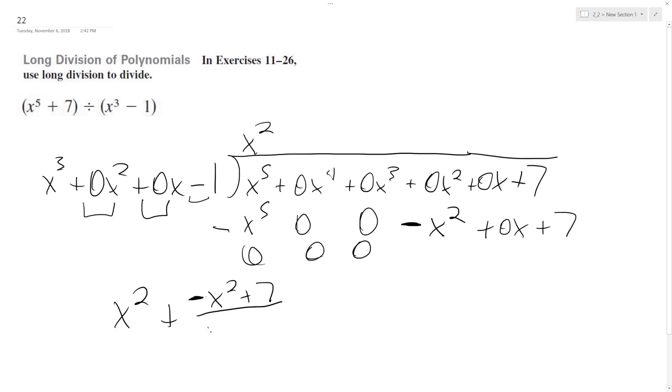Alright, and then this is all over x cubed minus 1. So if we took this and multiplied it by x cubed minus 1, we get x to the 5th plus 7. Alright, that's it. I hope that helped you out. Thanks for watching. Have a great day.